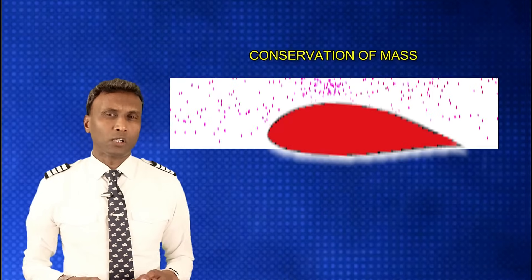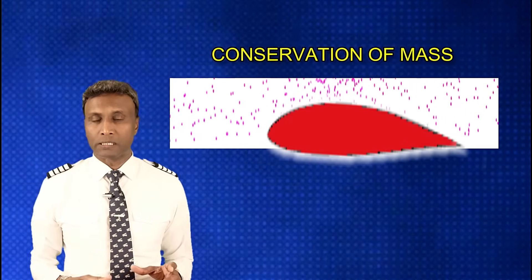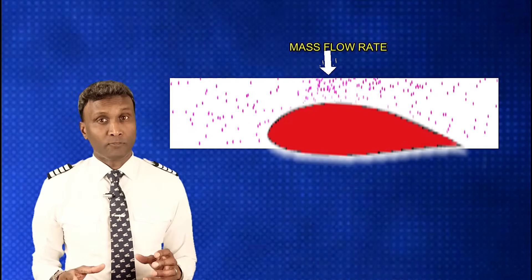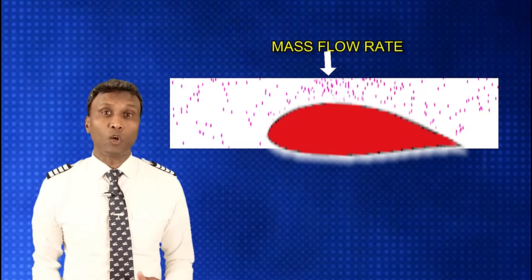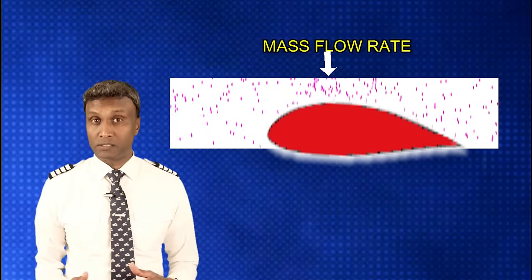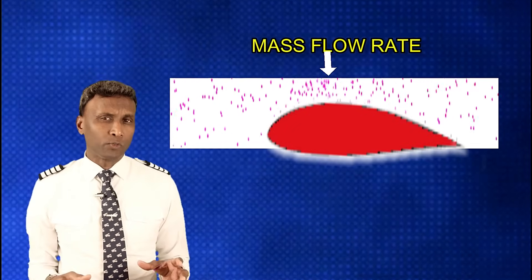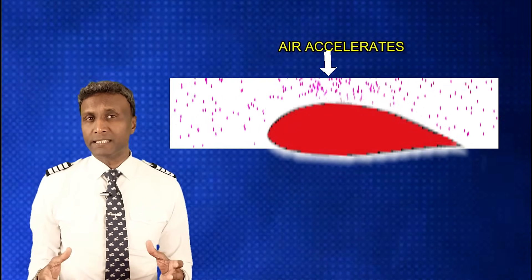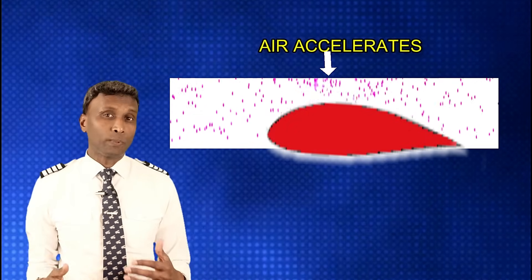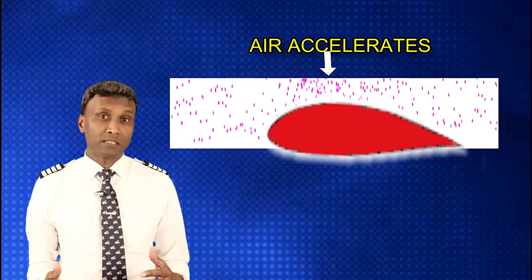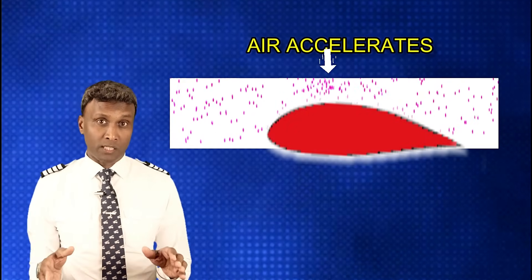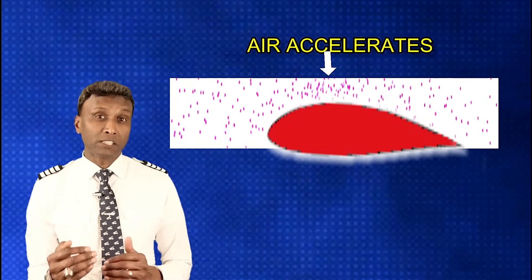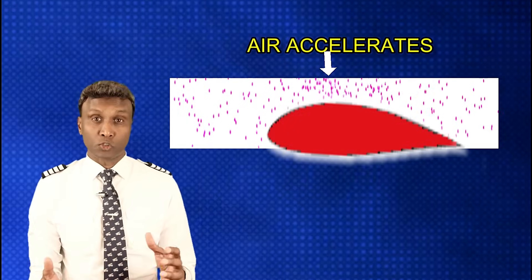The conservation of mass principle dictates that the mass flow rate remains constant along the aerofoil surface. As the aircraft moves forward, the air adjusts its speed to accommodate changes in curvature, resulting in acceleration to maintain a continuous and controlled flow.